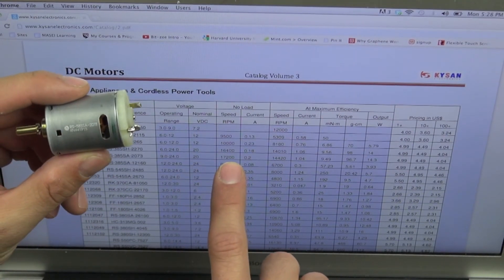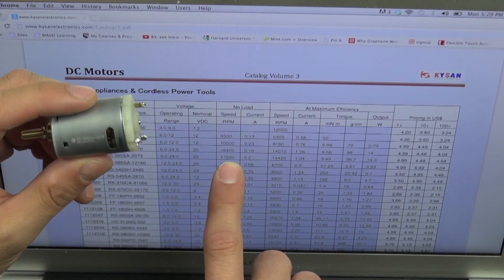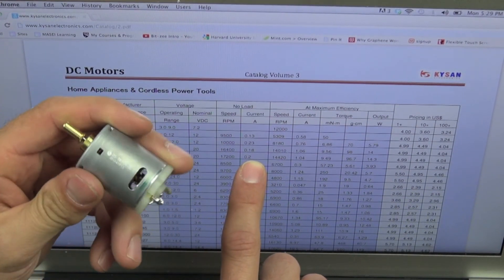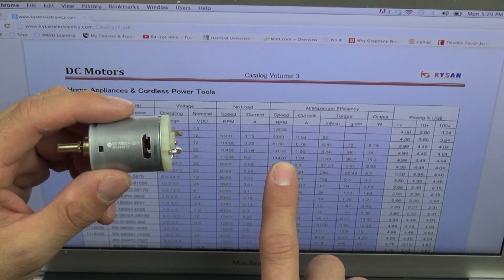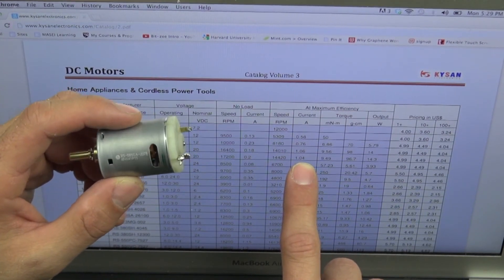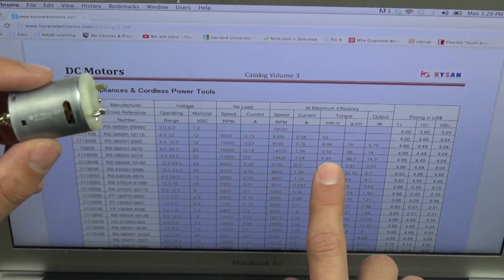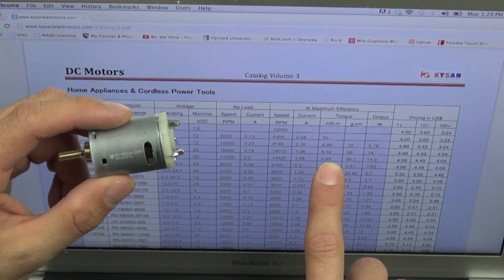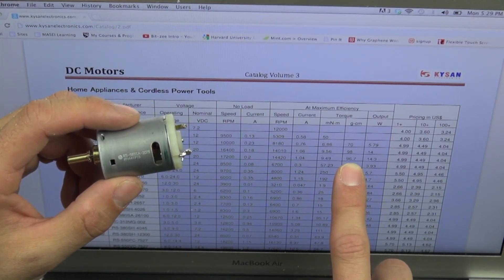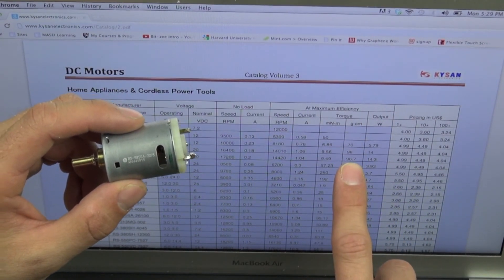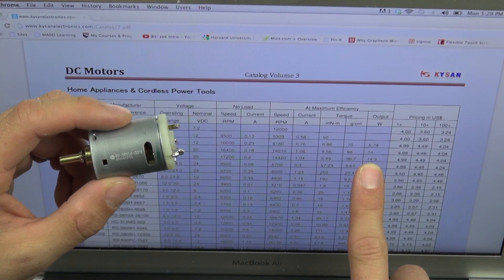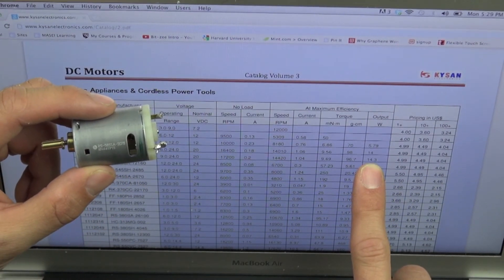With no load, the motor will spin at 17,200 RPM, which is very fast, at a current of 0.2 amps. And we're always going to be operating under load, so we'll always be pulling more than 0.2 amps. The speed of the motor at maximum efficiency is around 14,420, and then we've got a current at that speed of around 1 amp, and that's under load. And then the torque is 9.49 newton meters or 96.7 gram centimeters, and that's the twisting force that the motor can generate. And so that's an important number to know. It does look like that's going to be enough to move our craft around since it's not going to be very heavy. And then the motor can generate an output of 14.3 watts.